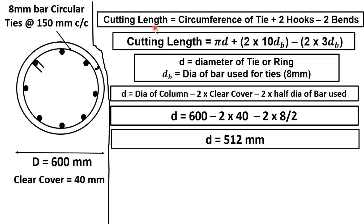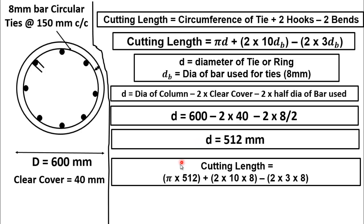Now just putting values in this equation, cutting length is equal to πd plus two times 10d_b minus two times 3d_b. We will get cutting length is equal to π which is constant multiplied by 512 which is the diameter of tie or ring plus two multiplied by 10 multiplied by 8 which is the diameter of bar minus two multiplied by 3 multiplied by 8 which is diameter of bar.